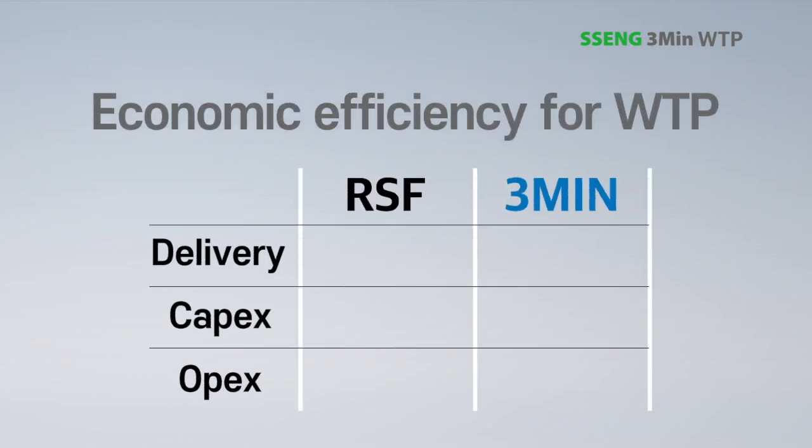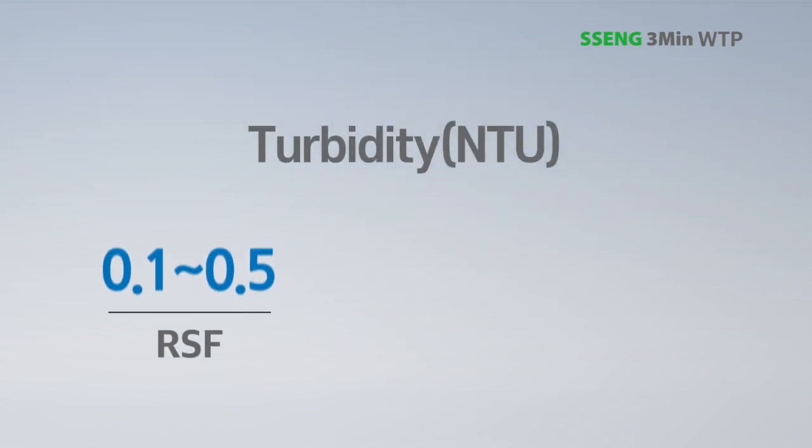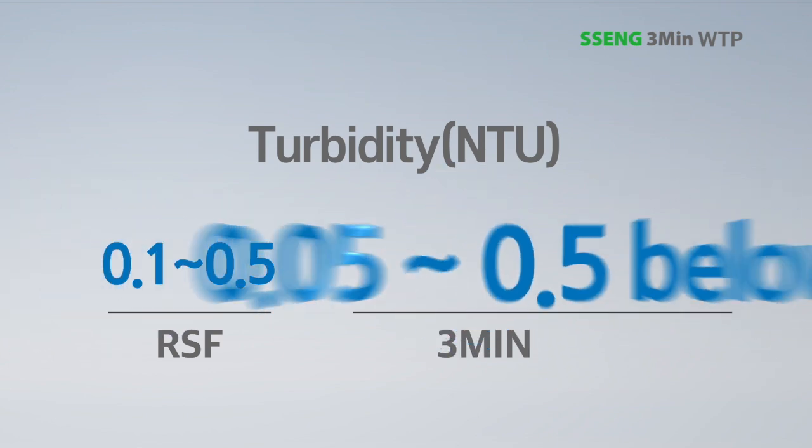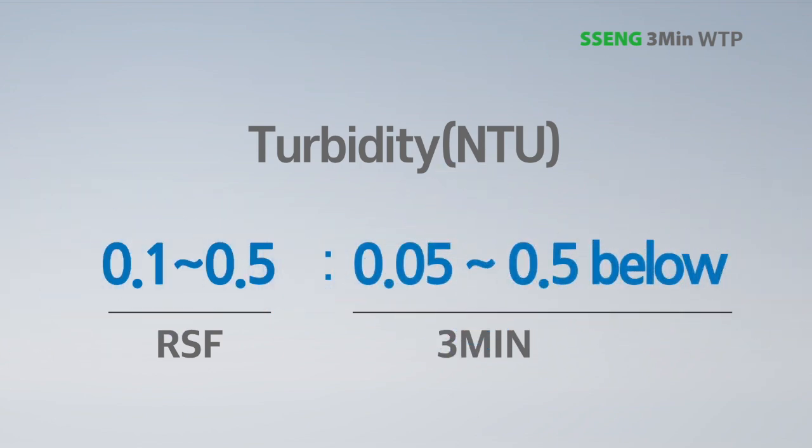The 3-minute WTP reduces delivery time by one-fifth. CAPEX and OPEX are one-third cheaper than conventional RSF. Despite the dramatically smaller size, water treatment quality is better.